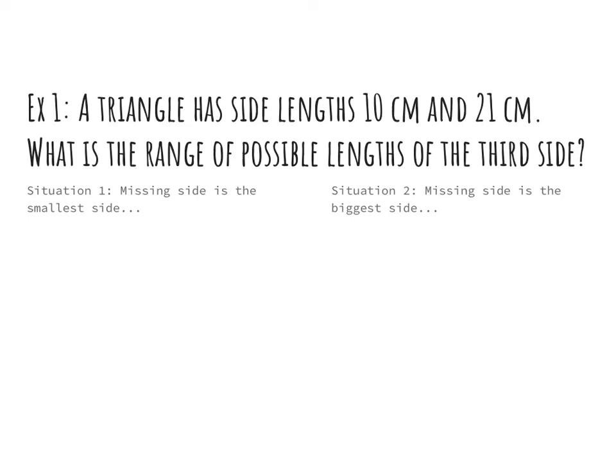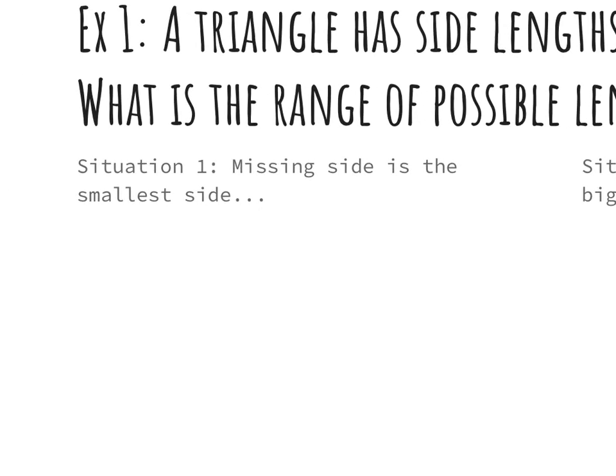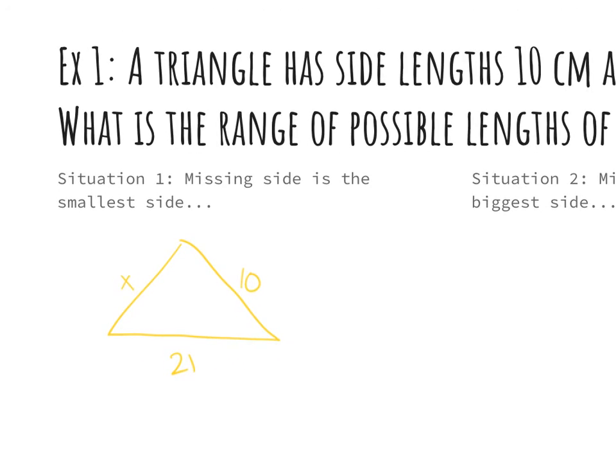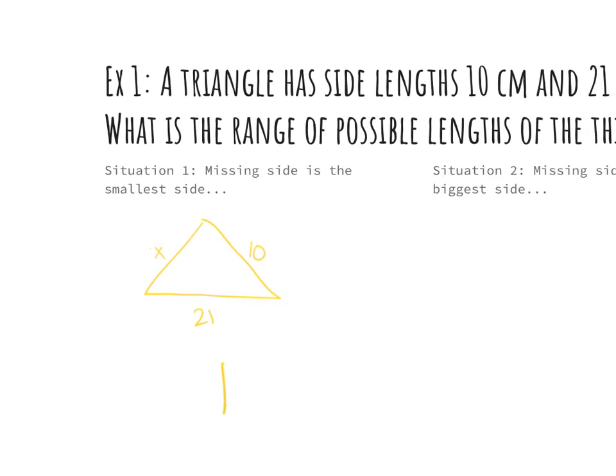When I'm asked to find the range of possible lengths of the third side I have two scenarios I want to think about. First of all I want to think of what the smallest possible side is. So if I have a triangle like this and I have one that's 21 and one that's 10 and I'm looking for that missing side. The smallest number that I can add to 10 to get to 21 is 11. Now, 11 itself does not work.